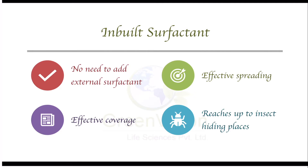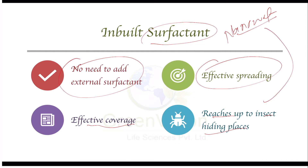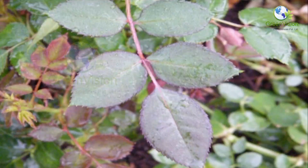MM-Pact has a built-in surfactant called Nanobit — a very effective organic surfactant, spreader, and penetrant. This surfactant is already added in MM-Pact so you do not need to add an external surfactant. Since Nanobit is there, you get effective spreading and coverage, and the active ingredient can reach the insects' hiding places, because sucking insects tend to hide in cracks and crevices on the plant.